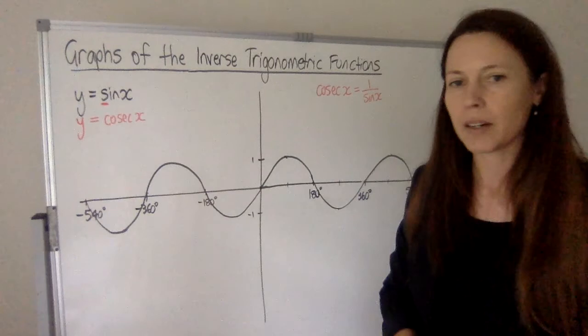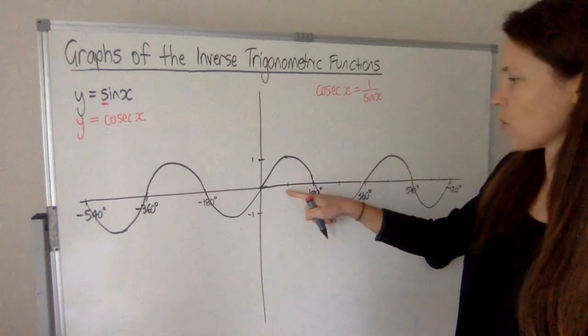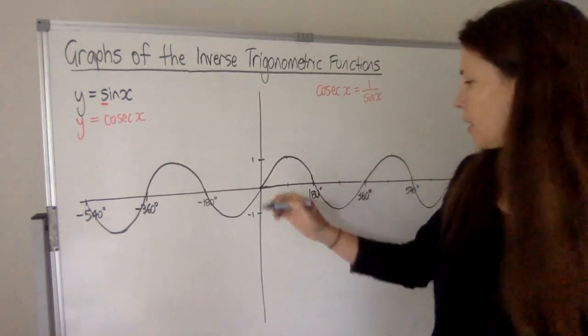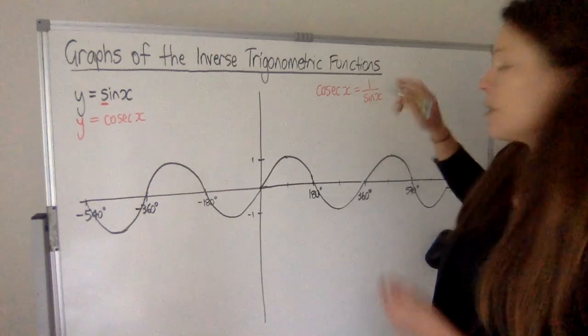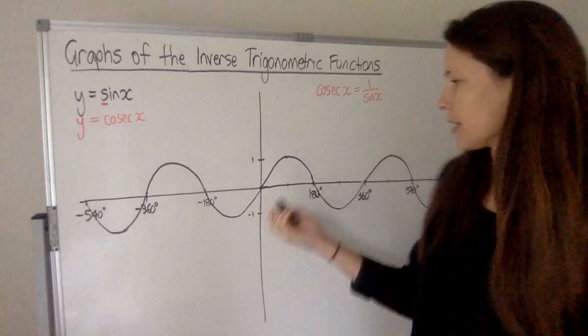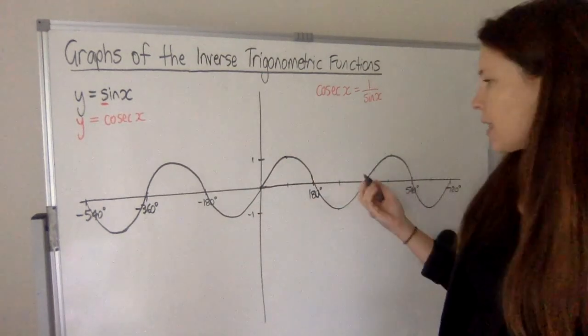Cosec of x is equal to 1 over the sine of x. Now, keep that in mind with your graph because all we've got to do is say, alright, what's the y value at any one point along this graph? What's the y value? And what happens if I tip that upside down? In other words, find the reciprocal of it or find 1 over that number. Now, let's look at points of interest first.